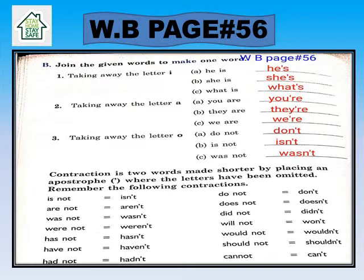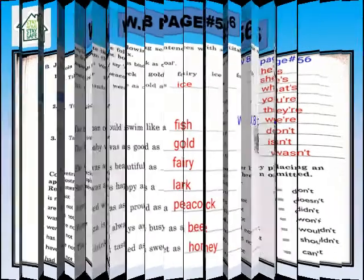Now class, contraction means two words made shorter by placing an apostrophe where the letter has been omitted. Remember the following contractions: is not, are not, was not, were not, has not, had not — we take away the 'o' between 'n' and 't' and put an apostrophe. Also: do not, does not, did not, will not, would not, should not, and cannot — we write 'd-o-n apostrophe t'.